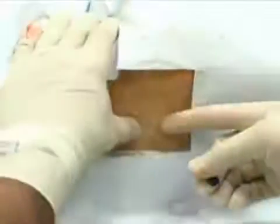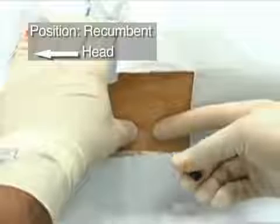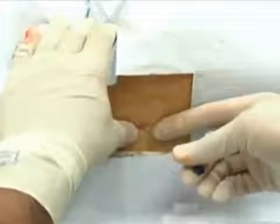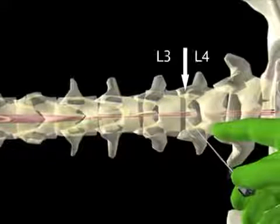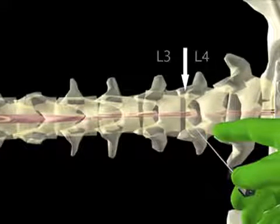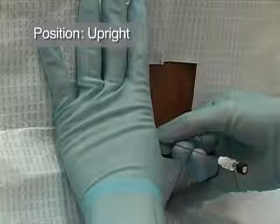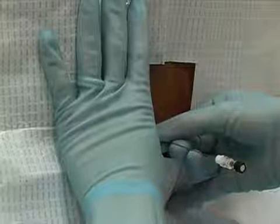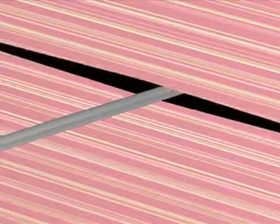Identify the anatomical landmarks once again and insert the needle with the stylet firmly in place, in the midline, at the superior aspect of the inferior spinous process, directing it at an angle of approximately 15 degrees, as if aiming at the patient's umbilicus. You can use a pencil tip needle, or ensure that the bevel of the needle is in the sagittal plane so as to spread rather than cut the fibers of the dural sac.